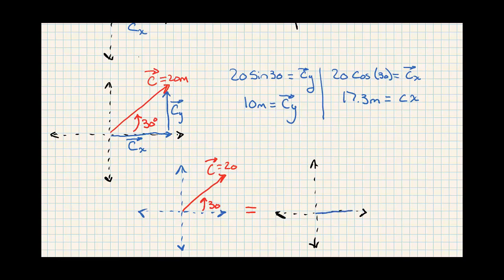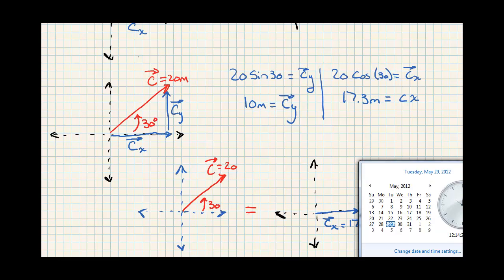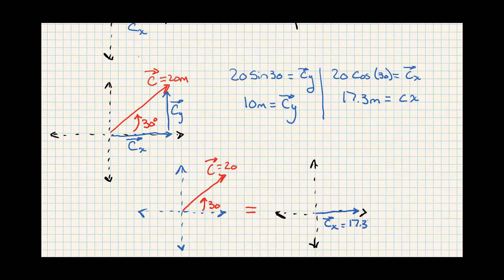So you can have either this one vector lifted at an angle or you could have these two separate vectors, Cx of 17.3, or a Cy of 10. Those are meters. These are equivalent statements. These two vectors will have the same effect as this one angled vector, which makes life really easy to solve.